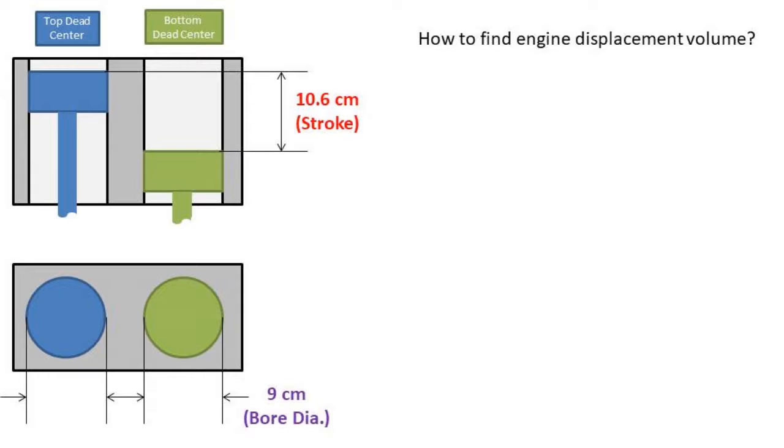We will also need to know the engine cylinder's bore diameter. In this case, it is 9 cm and is marked in purple. And finally, the number of cylinders in the engine. This engine has two cylinders.